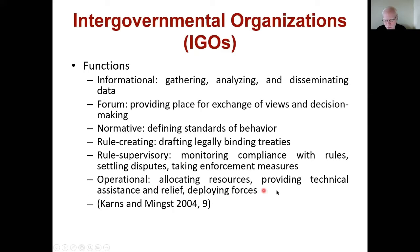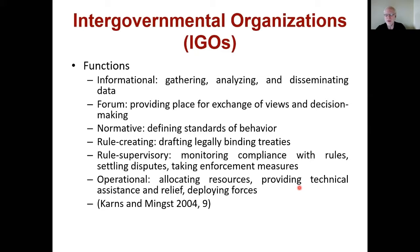Finally, IGOs have an operational function — allocating resources, providing technical assistance, relief, and deploying forces. The UN might deploy peacekeepers or provide help on the ground. This can be useful in providing resources quickly where needed. Many member states experiencing problems may also have technical deficiencies or lower state capacity and may lack experts in relevant areas, so an IGO can bring in experts from around the world to solve those problems — particularly helpful in less developed countries.